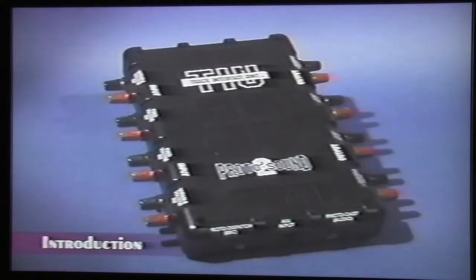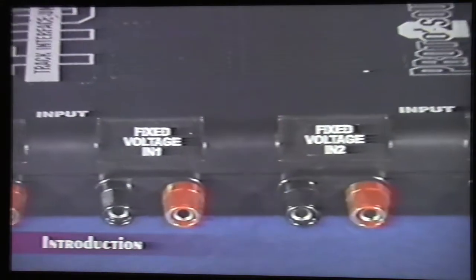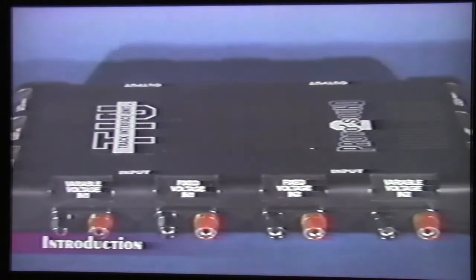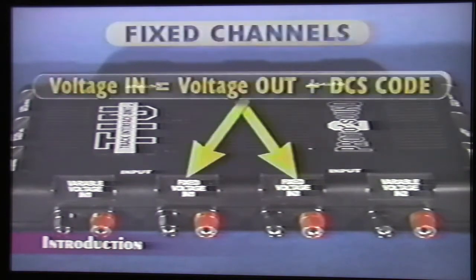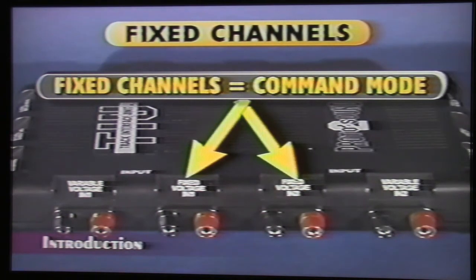This is the Track Interface Unit, or TIU. This is the device that puts the DCS signal on the tracks. The TIU has four separate channels: two fixed voltage channels and two variable voltage channels. On the fixed channel, the power that goes in is the same as the power that comes out to power the track, with the DCS code added to it. The fixed channels should be used for command mode operation.